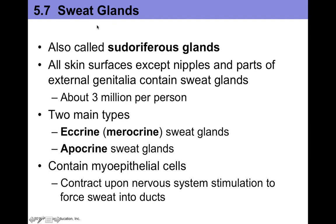In this video we're going to talk about sweat glands. Sweat glands are also called sudoriferous glands, and all skin surfaces except for the nipples and external genitalia contain sweat glands. In fact, you get about three million of these per person, and there are two major types of sudoriferous or sweat glands.